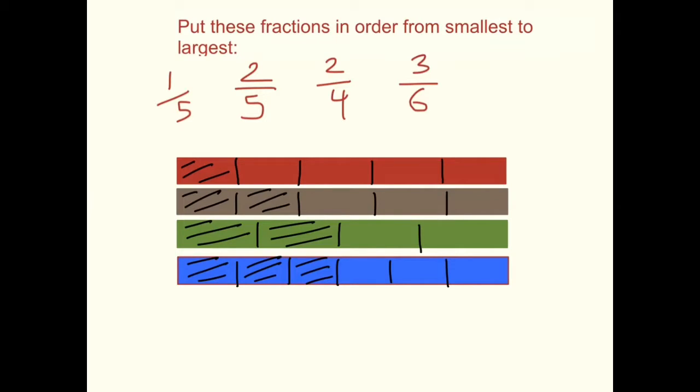Now, for the last step, we need to put these in order from smallest to largest. And as you can see, comparing the fractions, one-fifth is actually the smallest. So we're going to say one-fifth is less than. Now, the next one up is we can see that two-fifths here is bigger than one-fifth, but it's actually smaller than both two-quarters and three-sixths. So we're going to say one-fifth is less than two-fifths, which is less than two-quarters.